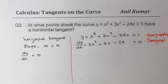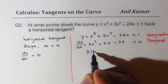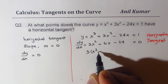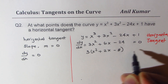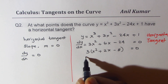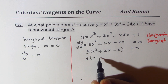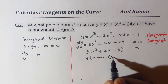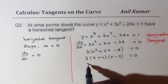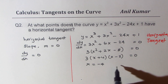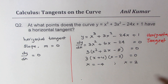Let's now solve it. We can take 3 as a common factor, so we get 3 times (x squared plus 2x minus 8) equals to 0. Now we can factor this equation to get (x plus 4) times (x minus 2) equals to 0.